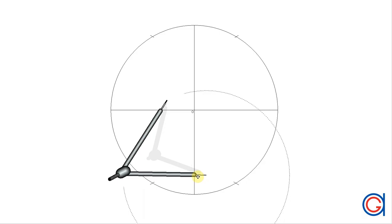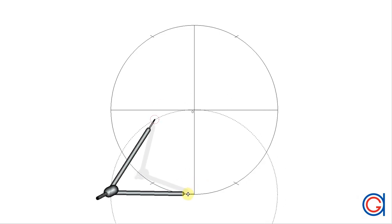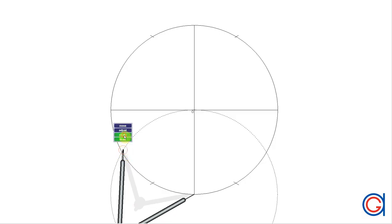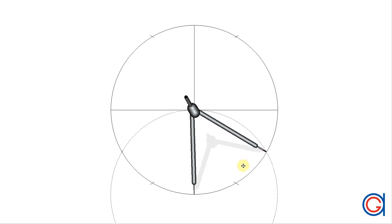And again, with the same length, setting our compass on the bottom of the vertical diameter, we scribe two more arcs to the left and to the right, making two more points, cutting on our circle.